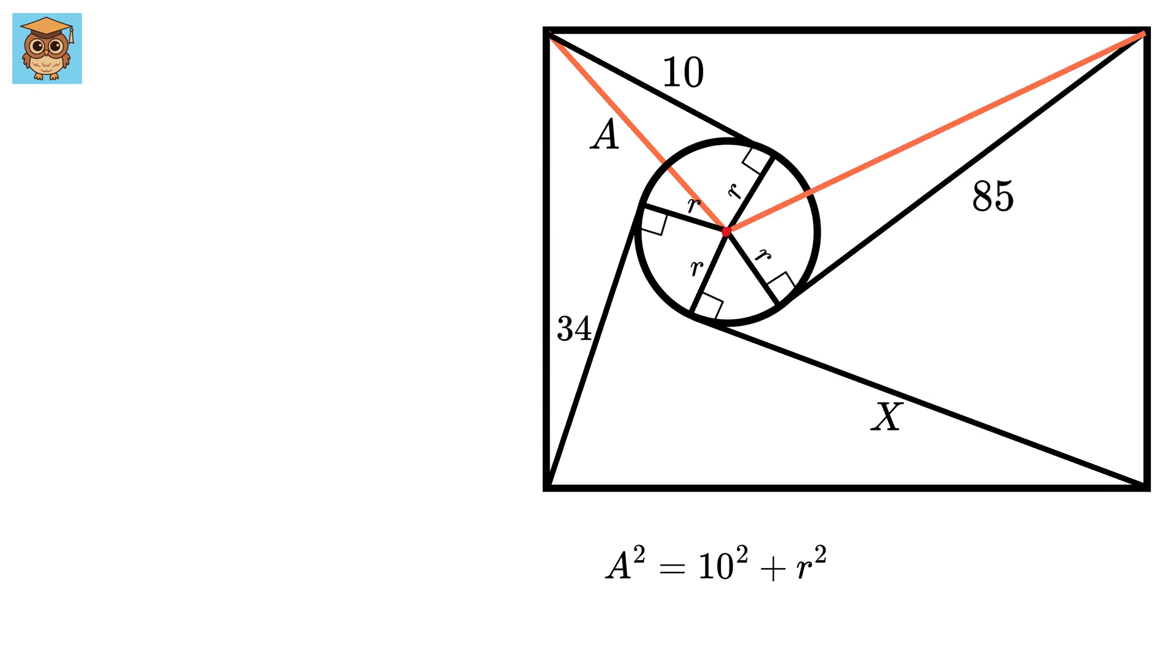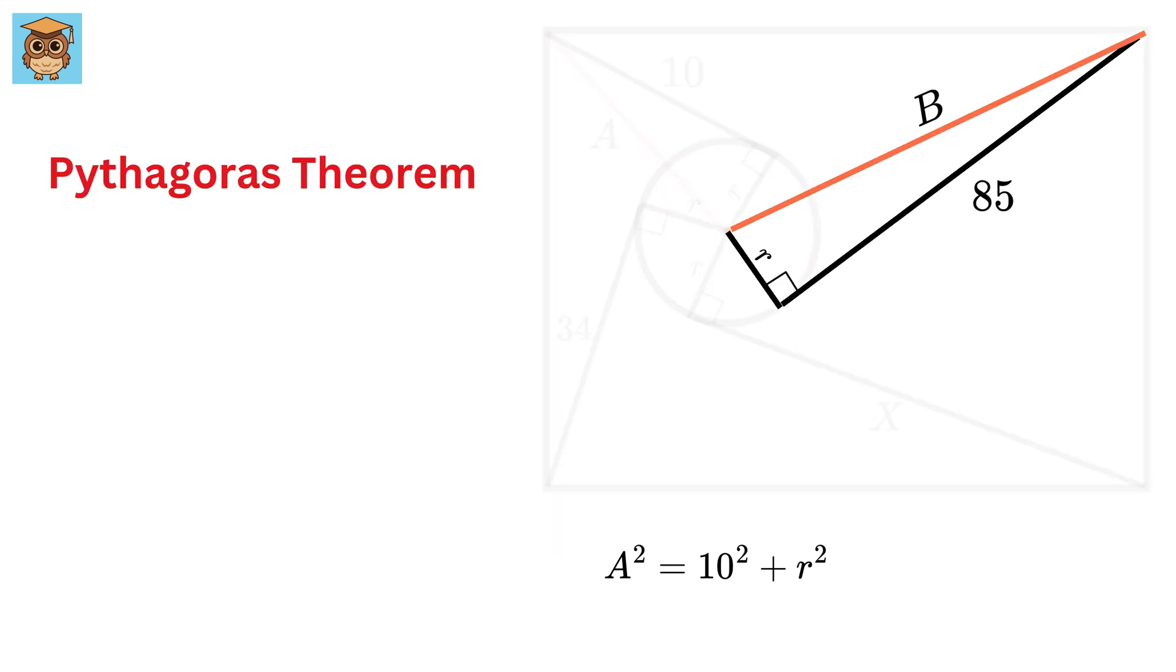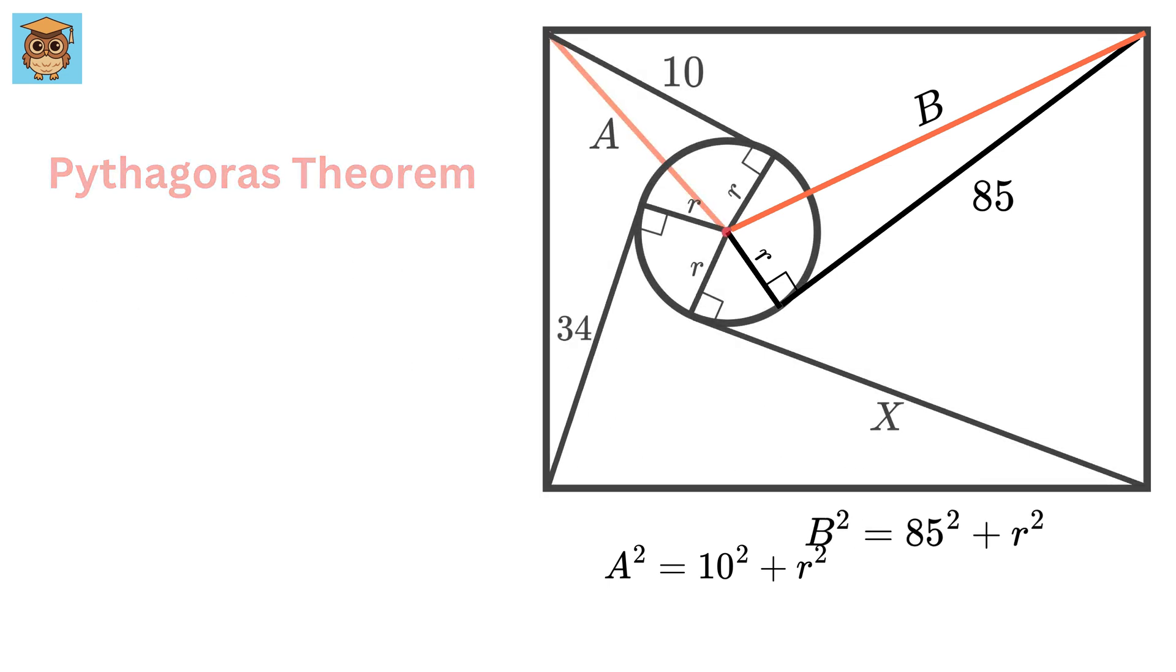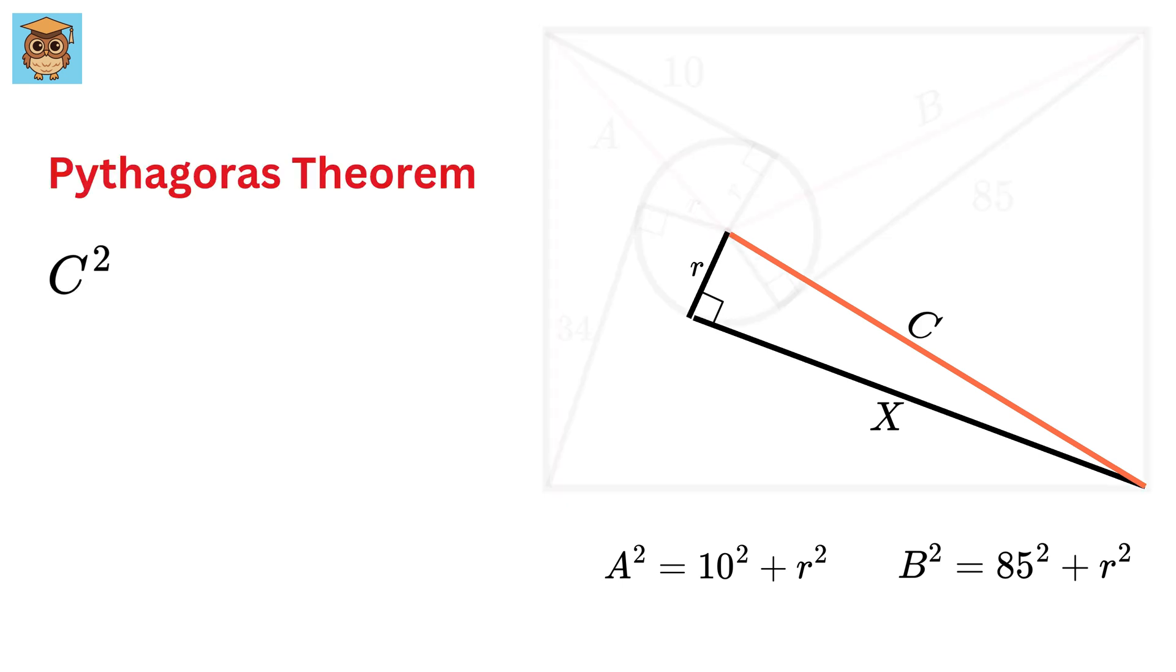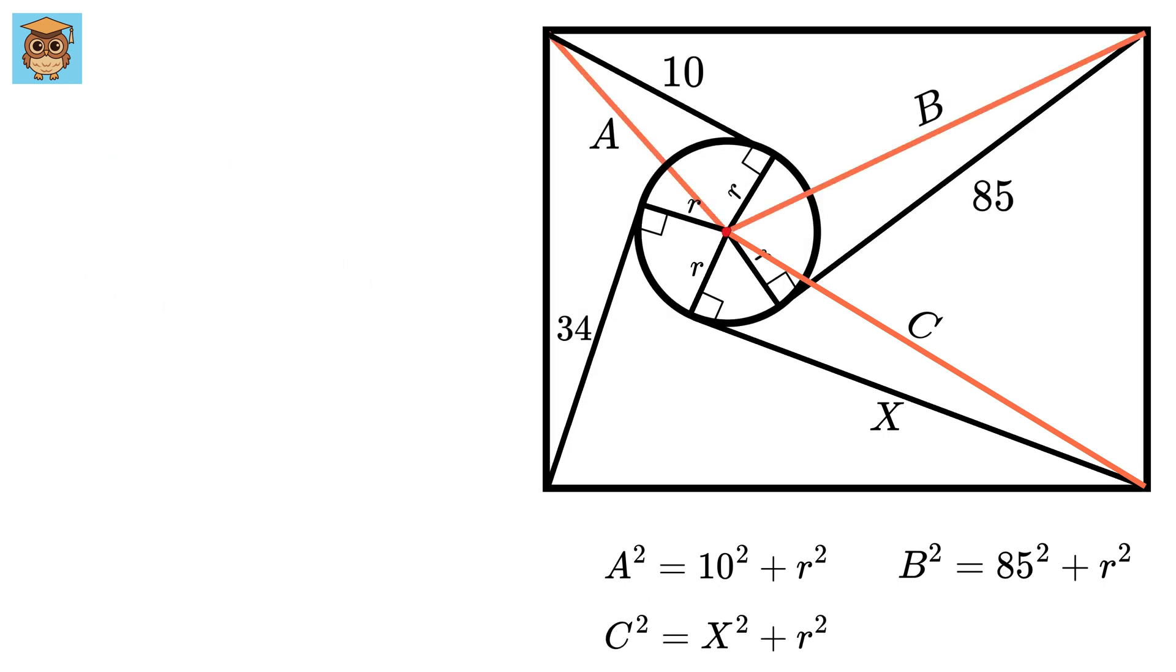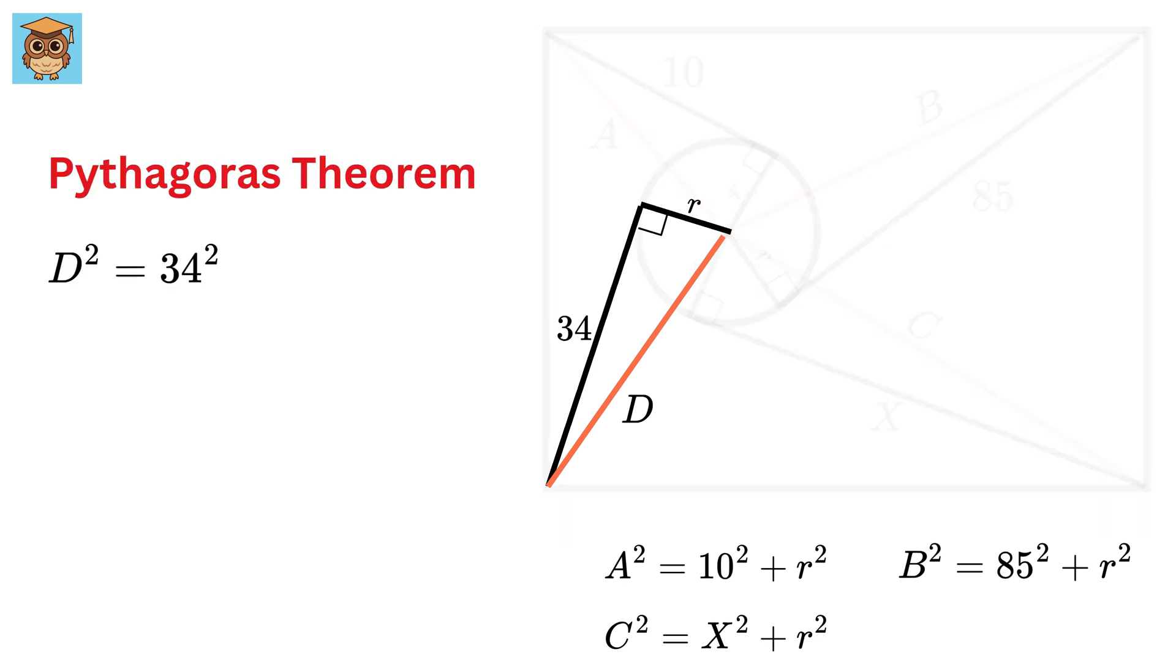Now, draw this line and label it as b. Consider this triangle. We get b square equals 85 square plus r square. Now, draw this line and label it as c. We get c square equals x square plus r square. Finally, draw this line and label it as d. We get d square equals 34 square plus r square.